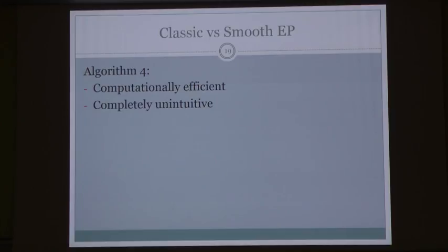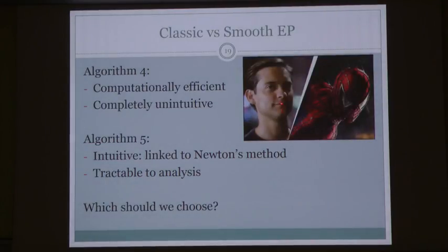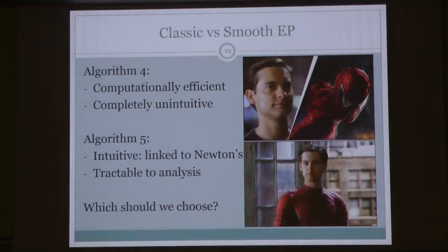We've got a difficult choice: on one hand, algorithm 4 — a classical approximate inference algorithm that is computationally efficient but somewhat unintuitive. On the other hand, algorithm 5, which is intuitive because it's linked to Newton's method through smooth gradient descent and is more tractable to analysis. But it's not much of a choice, because they are actually the same algorithm — one just has its 'superhero costume' on.